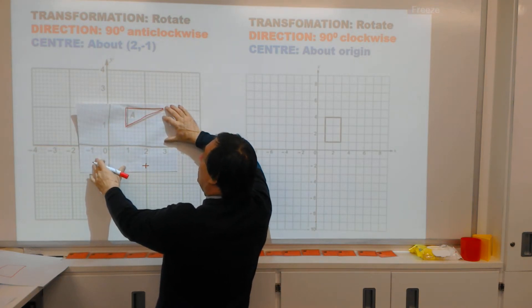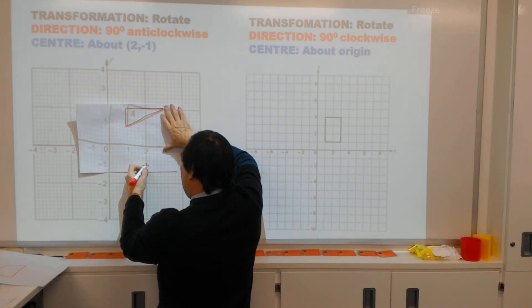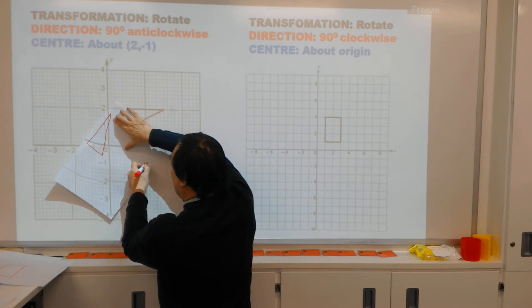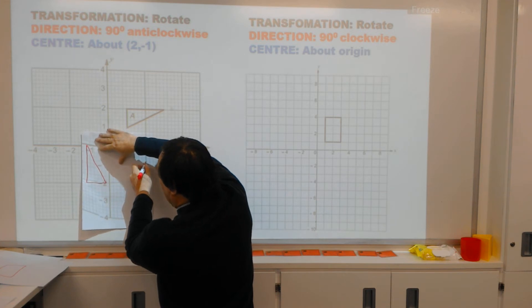So we've marked the center. Now we're going to have a look at the direction. That's 90 degrees anticlockwise. So you put your pen in the center of your cross on your tracing paper. And then you rotate. This is where you rotate. So we're rotating 90 degrees anticlockwise. That's against the clock.